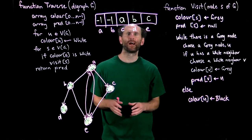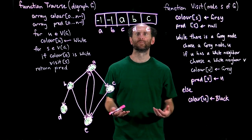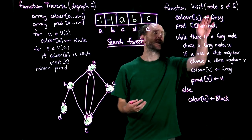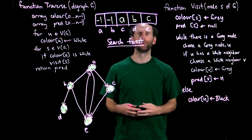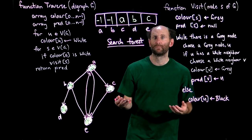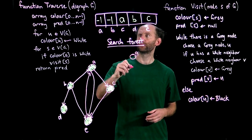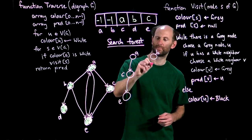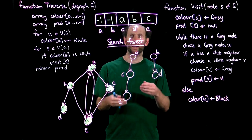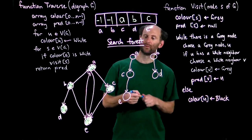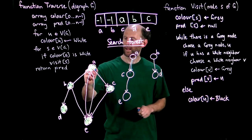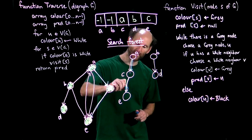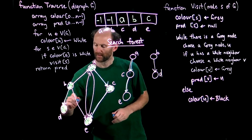The predecessor array represents a collection of trees — we call this collection a search forest. In each call to visit, we create a tree with root s, and every node reachable from s is included in that tree. In this example we have two trees: one with root a (containing a, c, and e) and one with root b (containing b and d). The arcs in the tree are the ones we followed in the traversal: a to c, c to e, and b to d.